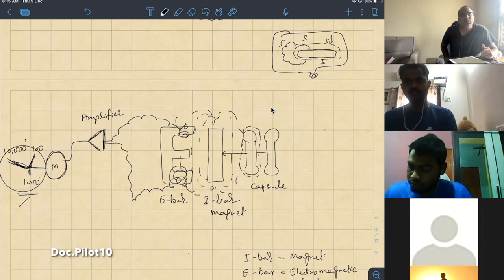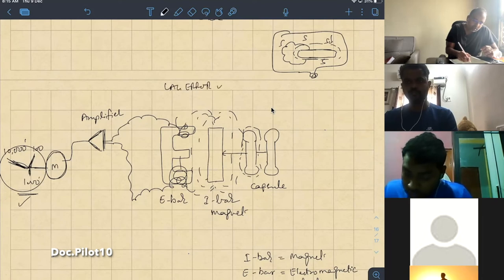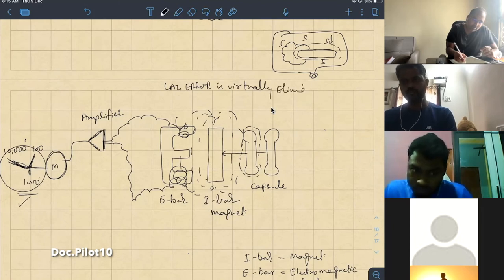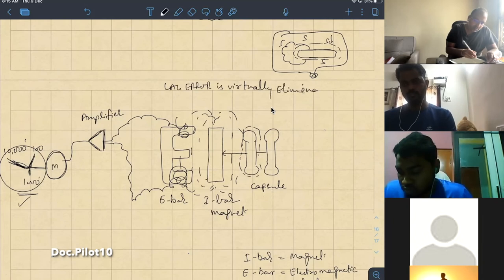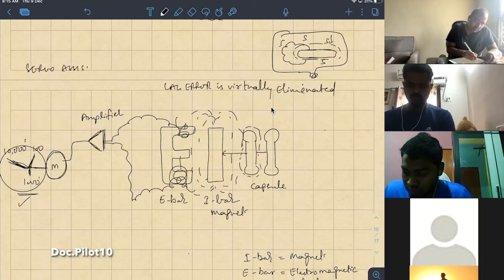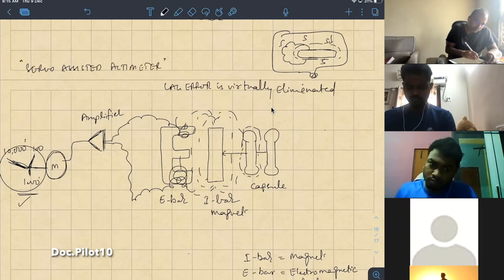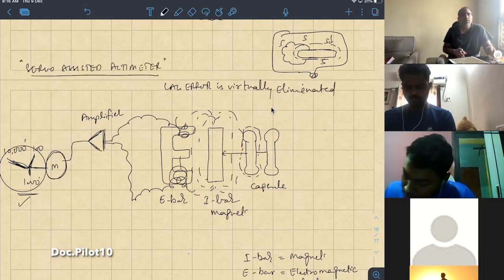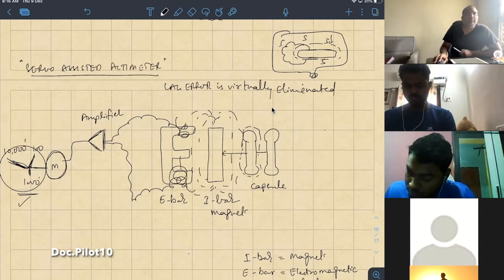So, lag error is virtually eliminated by using servo-assisted altimeter. Sir, can you explain once, please? Which one? Which point? Total? Yeah.